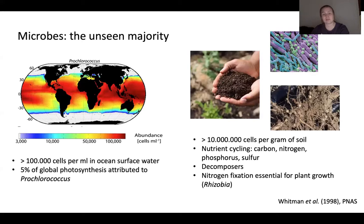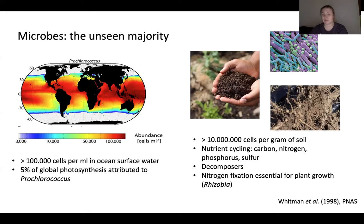Another habitat with a lot of microbes is the soil. In one gram of soil you will typically find more than one billion microbial cells. These microbial communities are very important for soil health — they play a role in nutrient cycling, they are decomposers, and some of them also form associations with plants, colonizing the roots and fixing nitrogen. For these plants, these bacteria are incredibly important.